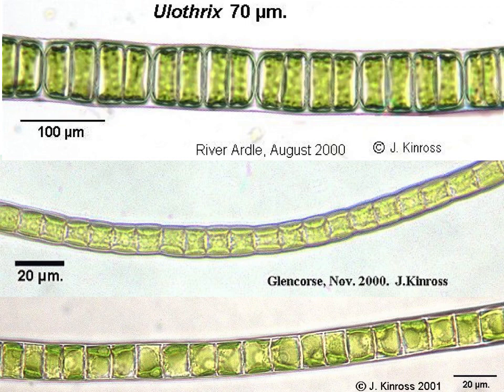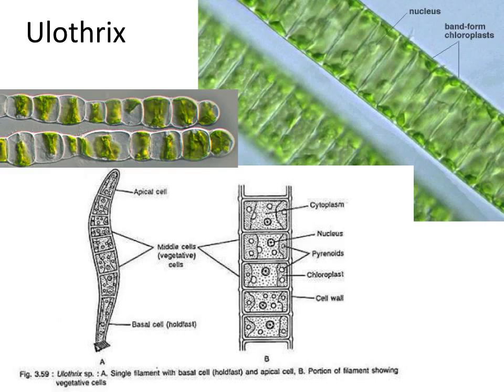As eukaryotic multicellular organisms, they have differentiated cells that assume specific functions. These cylindrical cells are joined from one end to the other, as can be clearly seen in these images. Its thallus, another word for plant body, is divided into three regions. The first is the basal cell, which you can see in the diagram on the bottom. The second is the apical cell, which is at the top of the diagram. And the third are the middle cells, which are all the cells between the basal cell and the apical cell, as shown in the diagram.